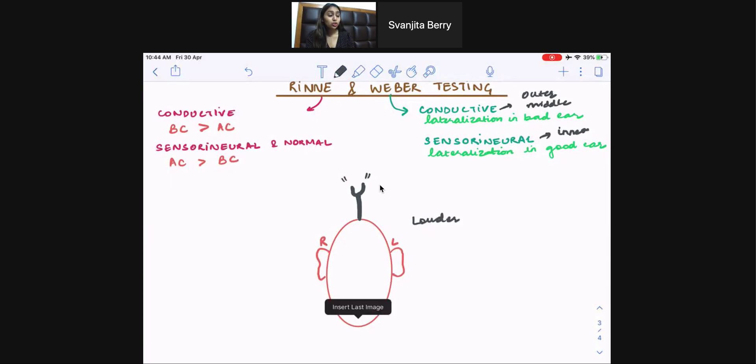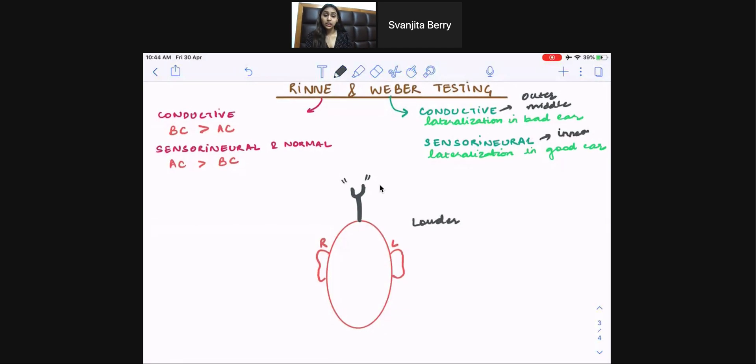This can mean two possible things. It's either louder in the left ear, or they're actually hearing it softer in the right ear. So we're between two choices here. Now, according to how we interpret Weber testing, if it's louder in the bad ear, it represents conductive hearing loss. So lateralization simply means the sound being louder in the bad ear. It represents conductive hearing loss.